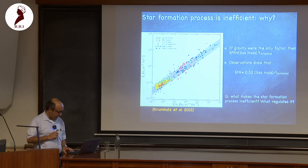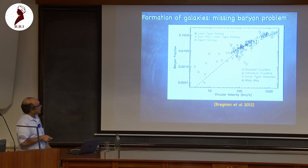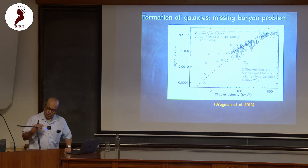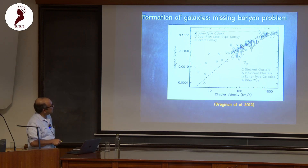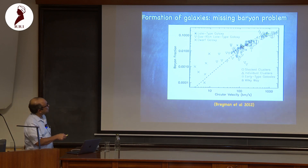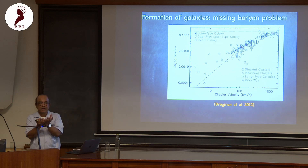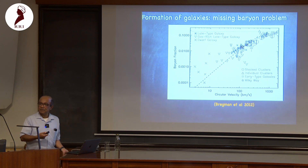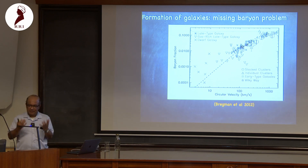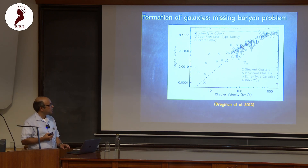This is also reflected in the baryon fraction. We know from Big Bang nucleosynthesis that baryons should be one-sixth of total matter. Looking across structures of different masses — where circular velocity is a proxy for mass — large structures have been able to hold on to their full share of baryons, while low-mass objects have far fewer baryons. This is a question of weaker gravitational fields not being able to hold on to their gas.